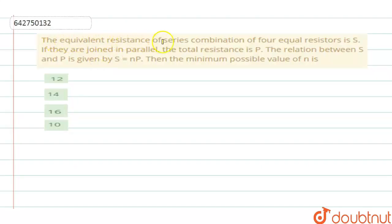The equivalent resistance of series combination of four equal resistors is S. If they are joined in parallel, then the resistance becomes P. The relation between S and P is given by S equals N times P. Then the minimum value possible for N is?